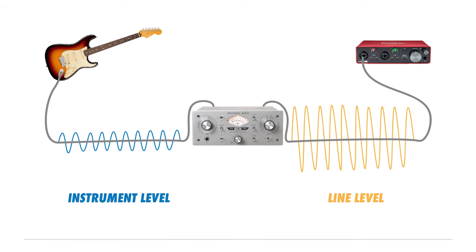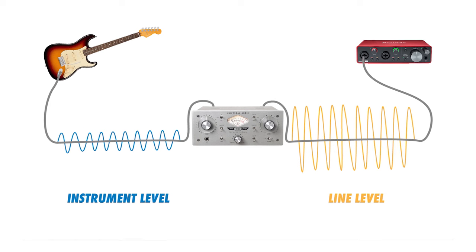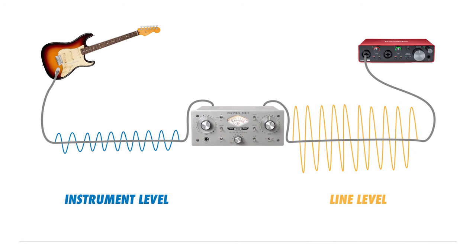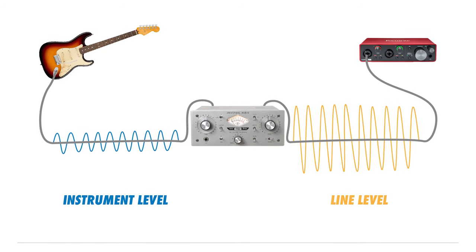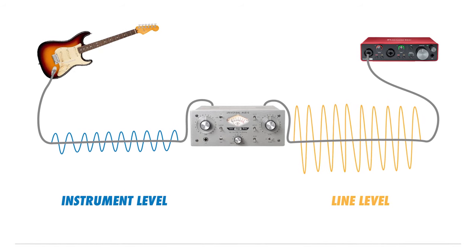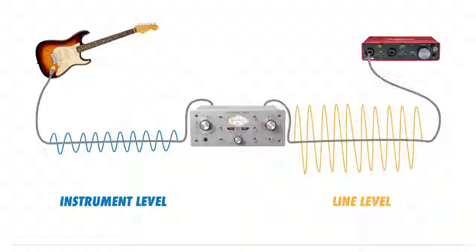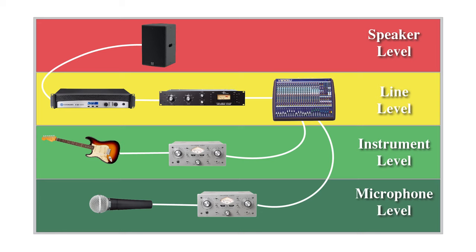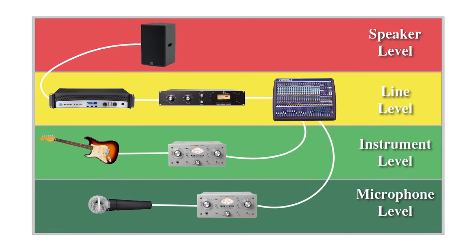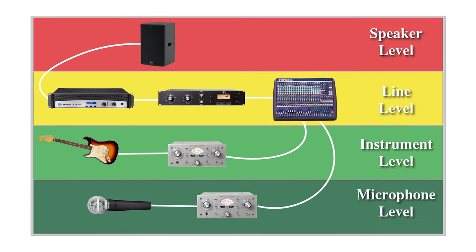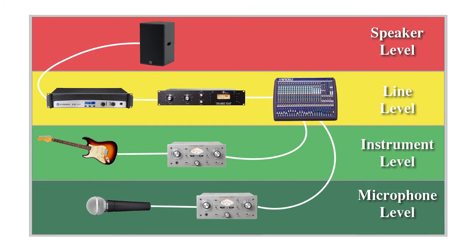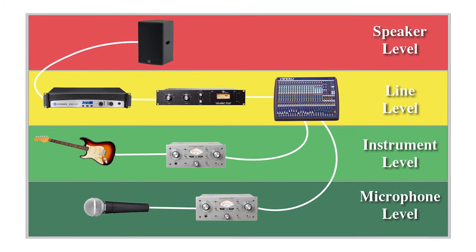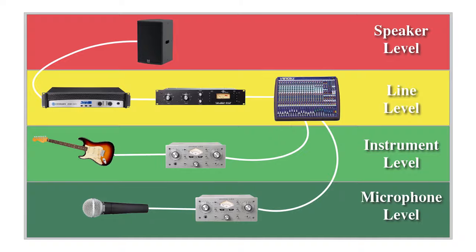Instrument level audio is slightly greater than mic level audio and is produced by instruments such as electric guitars. It typically ranges from about minus 40 to minus 20 dBV. Line level is the standard for professional equipment like mixers, amplifiers, and outboard gear at around zero dBV.